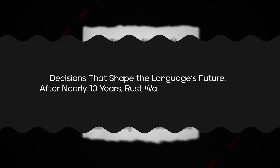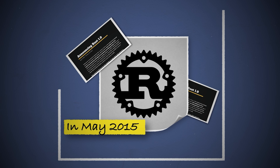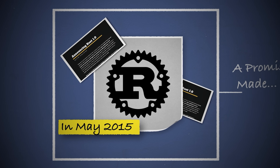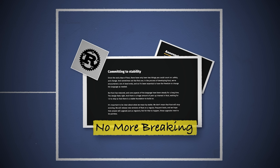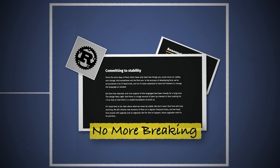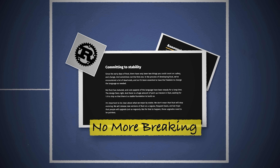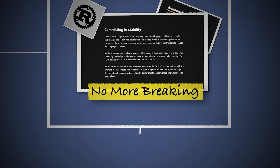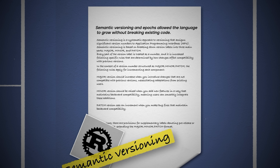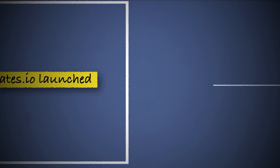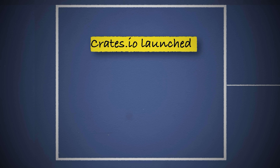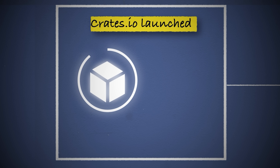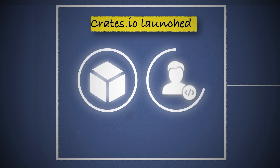After nearly 10 years, Rust was ready to go stable. In May 2015, Rust 1.0 launched with a promise: no more breaking changes. From now on, Rust would prioritize stability. Semantic versioning and epochs allowed the language to grow without breaking existing code. The ecosystem exploded — Crates.io launched, and in one year over 5,000 packages were published. More than 1,400 people contributed to the compiler.